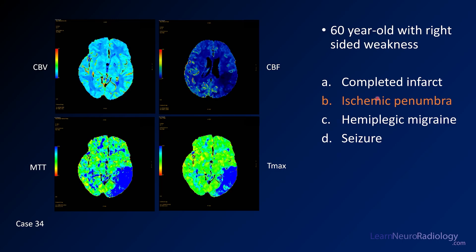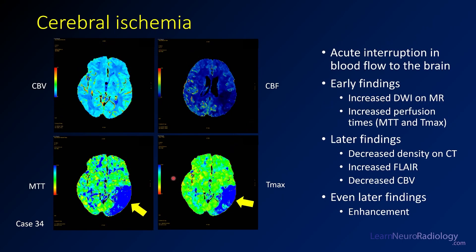This is a case of predominantly ischemic penumbra. The abnormality is in a vascular territorial distribution — the posterior aspect of the MCA distribution — making a vascular etiology more likely. There is relative preservation of the CBV. Cerebral blood flow is slightly diminished but relatively preserved, while the MTT and Tmax are markedly elevated. When you have time changes not matched by CBF and CBV changes, you're probably dealing with penumbra. A completed infarct would show more decrease in CBV and CBF. Hemiplegic migraine usually won't follow a vascular distribution.